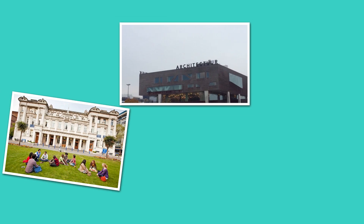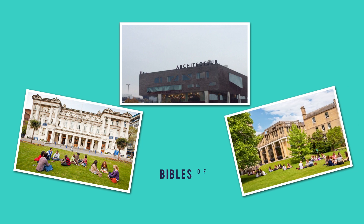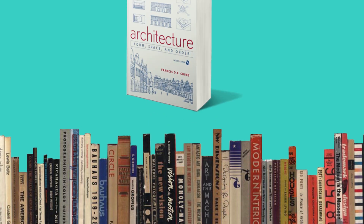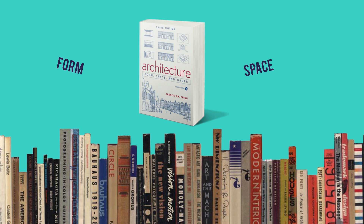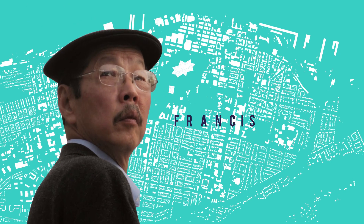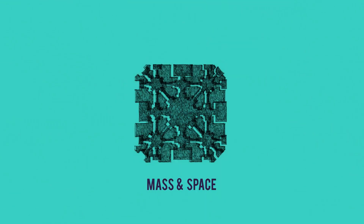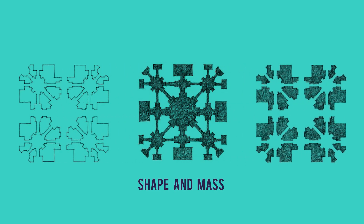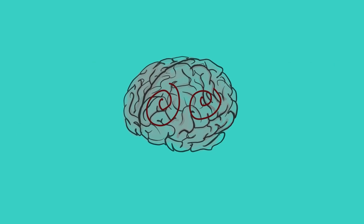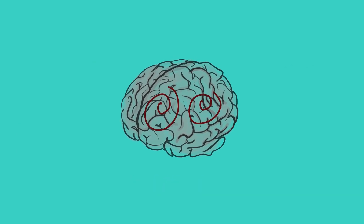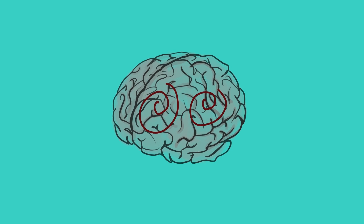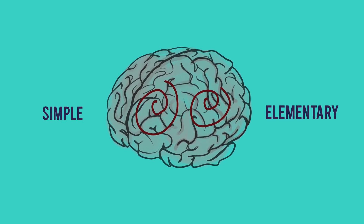In my first year in university, I was told that we must read one of the Bibles of architecture, called Architecture, Form, Space, and Order. According to Francis Ching, the author of this book, architectural forms occur at the juncture between mass and space. Ching explains that as architects, we should be concerned with both the shape and the mass containing the space. This idea might sound complicated. However, this book points out that the main vocabulary of forms in architecture is quite simple and elementary.